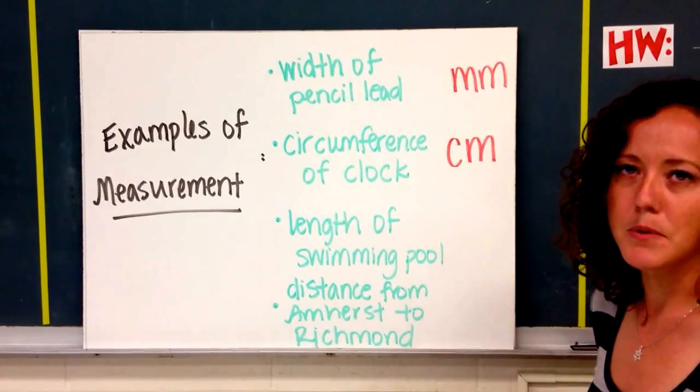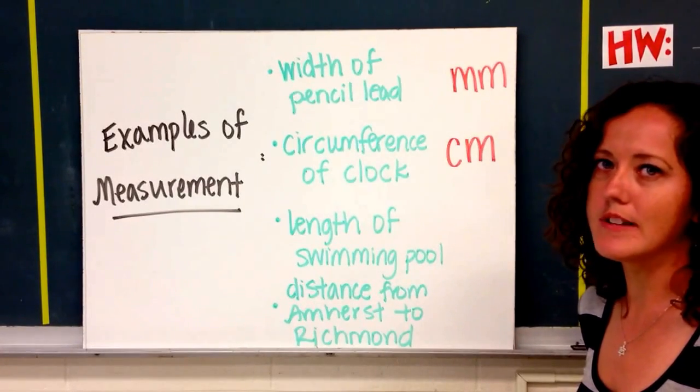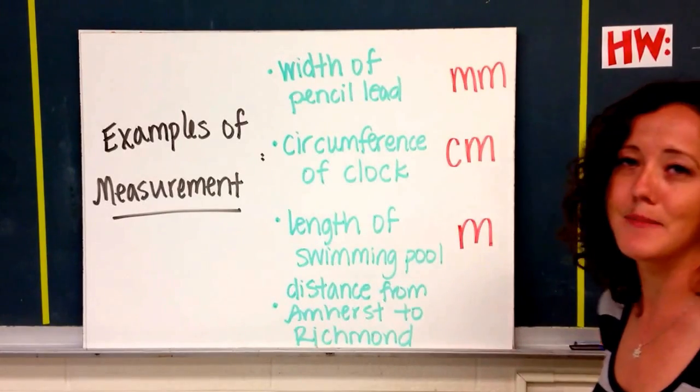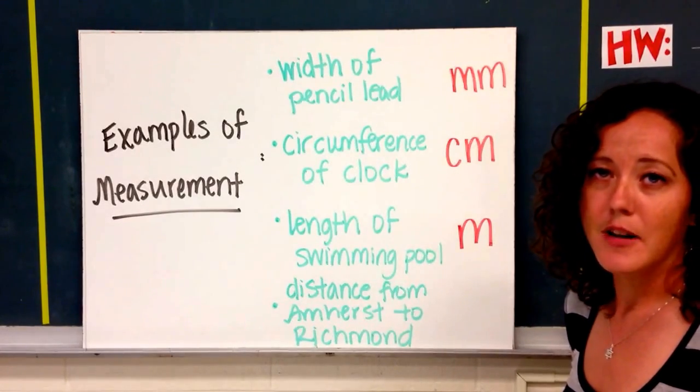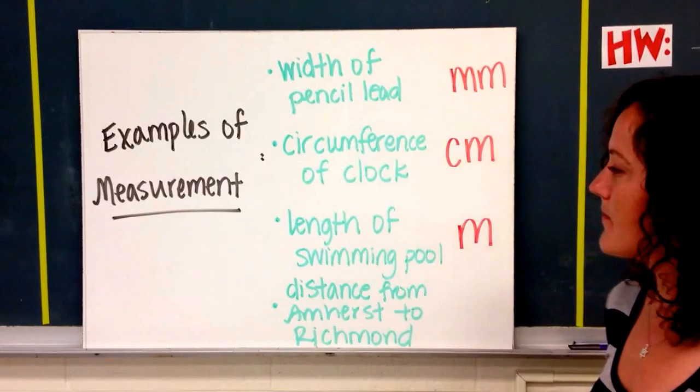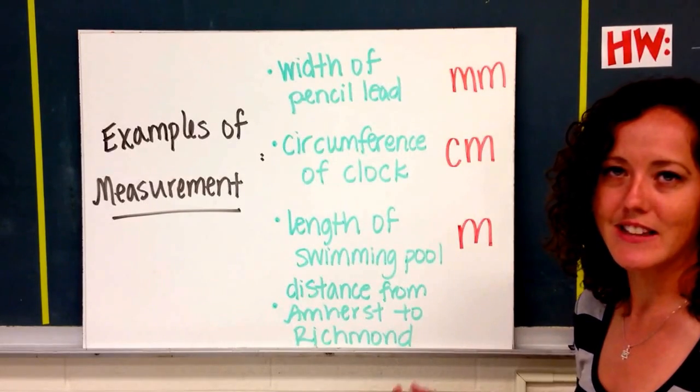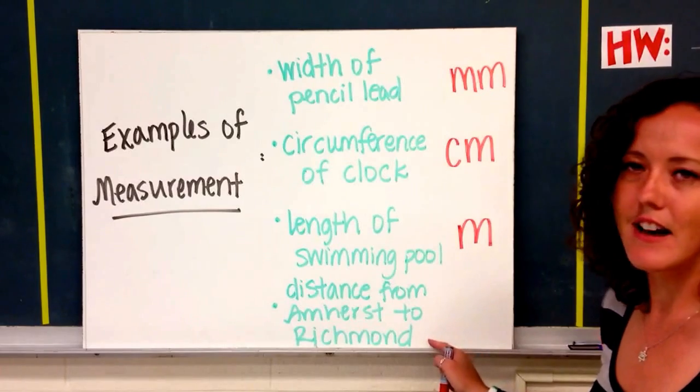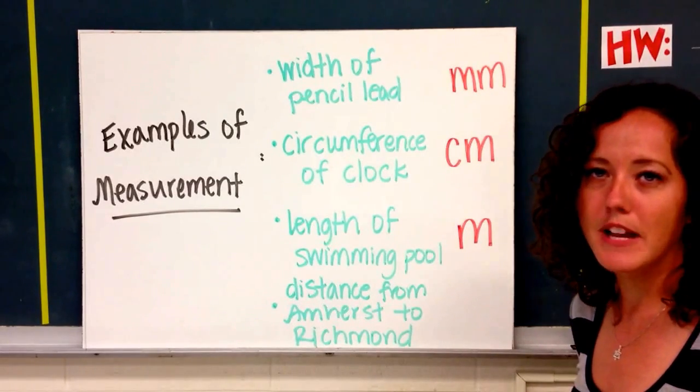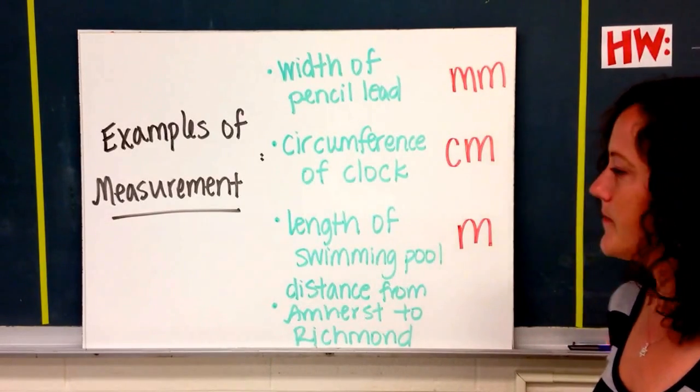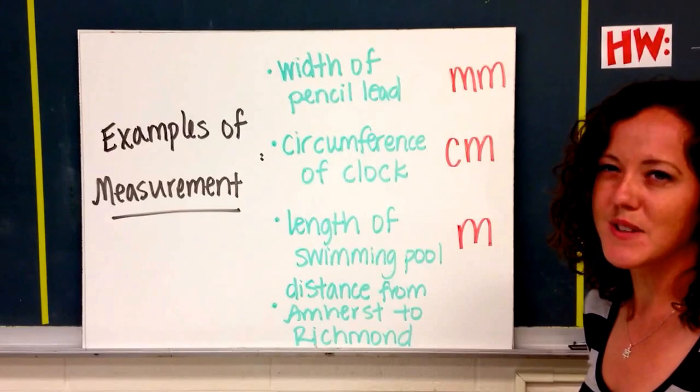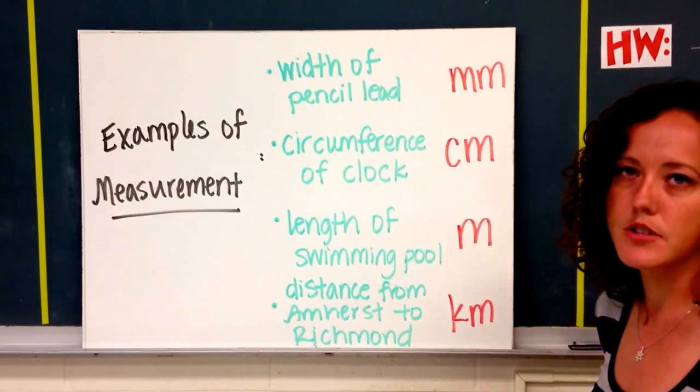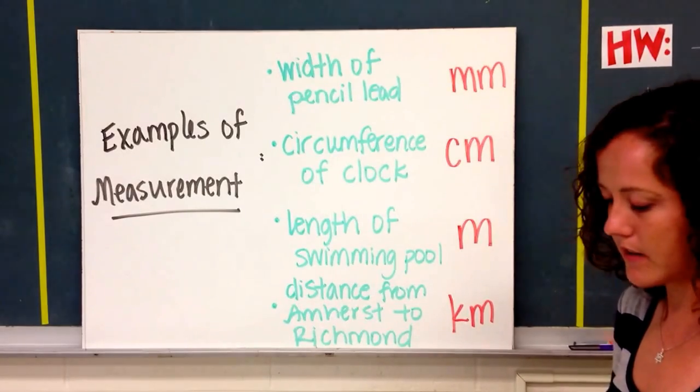The length of a swimming pool. Think about that one. Hopefully, if you've gone swimming before, you may have seen signs that talk about meters in terms of the length. And meters are closer to a yard. Finally, the last example is the distance from Amherst to Richmond. It's a lot longer. So instead of using meters, it might be a better idea to use kilometers, which are closer, like I said, to a mile.